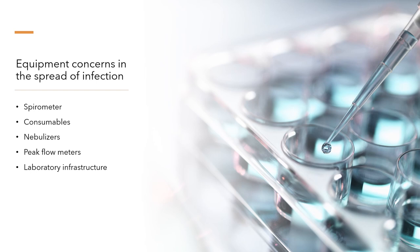In the pulmonary function lab, we have many different devices and consumables — spirometers, mouthpieces, rebreathing valves, nebulizers, peak flow meters — as well as the laboratory infrastructure itself. All of these are sources of infection. The disposable waste generated, such as mouthpieces and paper napkins, act as reservoirs for microorganisms, increasing the risk of cross-infection. Because we have so many disposable consumables placed in garbage bins, that waste is a reservoir of infection.